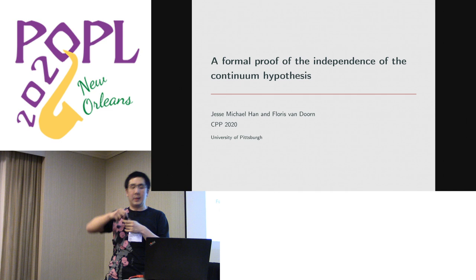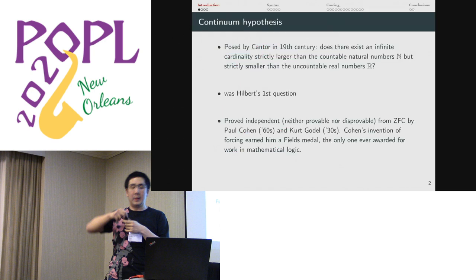Thank you for the introduction. I'm here to tell you today about a formal proof of the independence of the continuum hypothesis. The continuum hypothesis was posed by Cantor in the 19th century. Does there exist an infinite cardinality which is strictly larger than the natural numbers but smaller than the power set of the natural numbers?